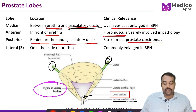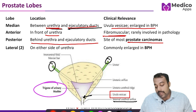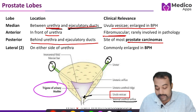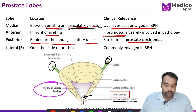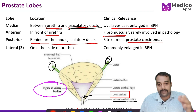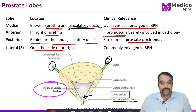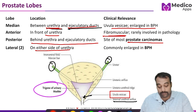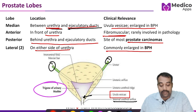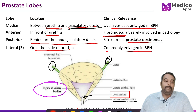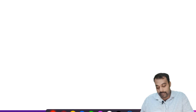There are also two lateral lobes situated on either side of the urethra, and they are commonly enlarged in case of benign prostatic hypertrophy as well.